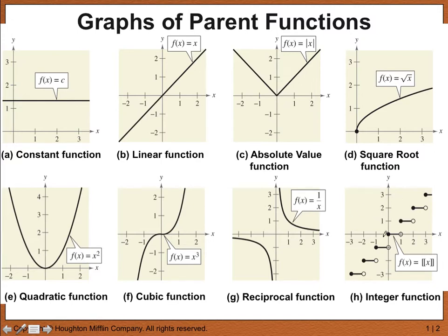Finally, we have the integer function. The integer function — the domain is all real numbers — and you simply chop off whatever decimal point there might be. So if x is 1.5, you just chop off the .5 and you get 1. This is sometimes called a stepwise function, where it's discontinuous and it's in different steps. We won't see this function very often, but it's something you should know.